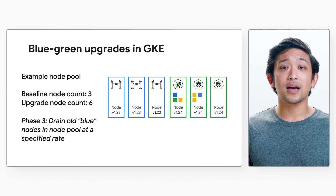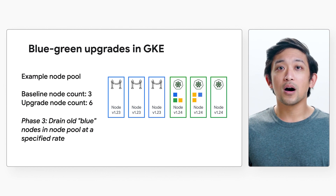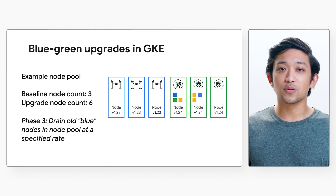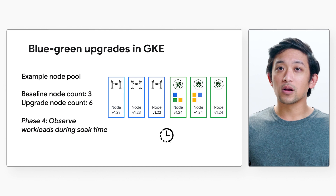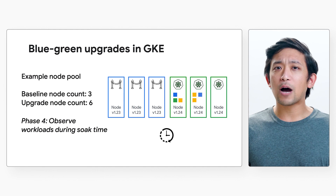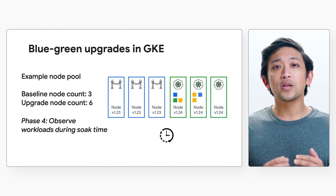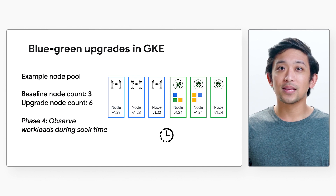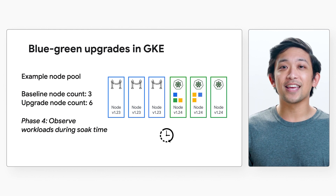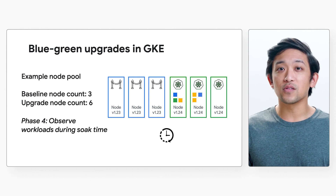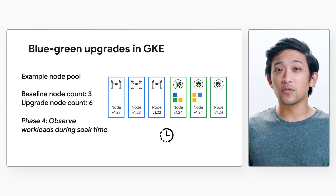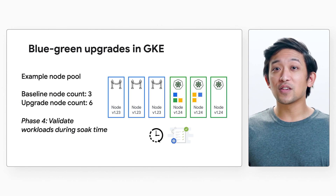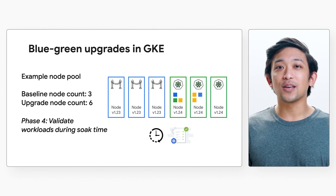Importantly, we are not releasing the old blue nodes during this time. Stateful workloads that need more time to shut down — such as flushing memory to disk — can take that time on the old blue node. And if we need to roll back for any reason, old nodes will be uncordoned and quickly made available for workloads to schedule back to. Once that's done, we step into phase four, in which we define a soak time duration. This lets us observe how workloads are behaving on the new nodes, and if needed, we can quickly roll back to the old blue nodes — even automating this based on SLOs set in Cloud Monitoring. The default soak time is one hour, but we can extend it up to seven days, giving control to observe workloads with diurnal or spiky usage patterns. Once workloads are validated, we can promote the upgrade and release the old blue nodes — or the upgrade continues automatically if the soak time expires — finally deleting the old blue nodes and returning to our stable baseline node count of three.